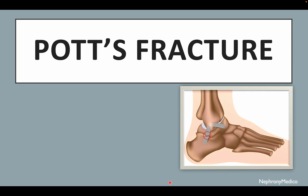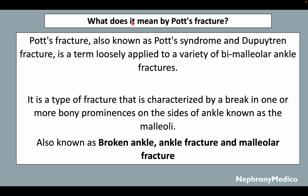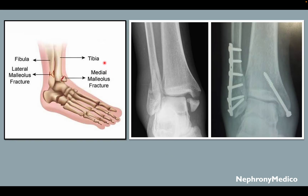Hello and welcome. Let's talk about Pott's fracture. Pott's fracture, also known as Pott syndrome and Dupuytren fracture, is a term loosely applied to a variety of bimalleolar ankle fractures. It is a type of fracture characterized by a break in one or more bony prominences on the sides of the ankle known as malleoli, also known as a broken ankle, ankle fracture, and malleolar fracture. This picture shows the malleolar fracture and this X-ray shows a bimalleolar fracture, also known as Pott's fracture.